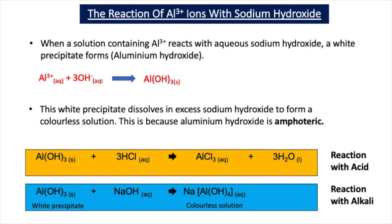It's not just aluminium oxide that is amphoteric — aluminium hydroxide is also amphoteric. Aluminium hydroxide can be formed when a solution containing Al3+ ions is reacted with sodium hydroxide solution, producing a white precipitate. The ionic equation is: Al3+(aq) + 3OH−(aq) → Al(OH)3(s). This white precipitate is aluminium hydroxide.